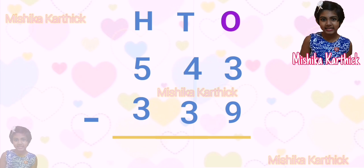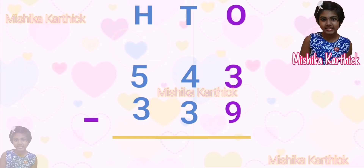Now, let's subtract the ones first. 3 minus 9 — we cannot subtract 3 ones from 9 ones. So, we will borrow 1 ten. 4 becomes 3, and 3 becomes 13. Now we can subtract: 13 minus 9 equals 4.